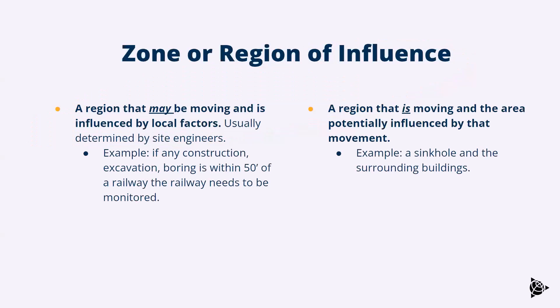In more of a practical application, we have a region of influence. The zone or region of influence is an area that may be moving and is being influenced by other factors, or it's a region that is moving and has potential to influence some other outside areas. An example of a region influenced by local factors is something like a railway or a building that's been stable for 50 years — then all of a sudden you're introducing some outside influence, like excavation or boring or construction nearby that could influence the structure within that region.